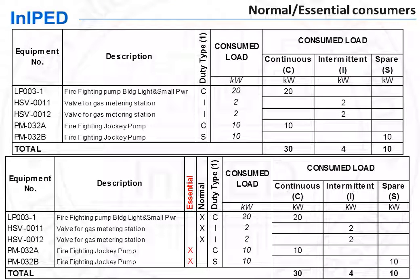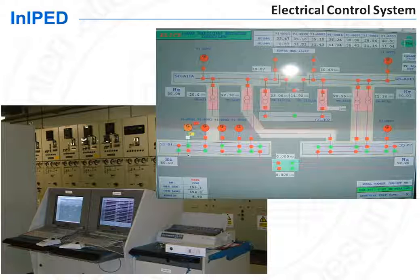The identification of essential consumers is done by the electrical engineer by asking process and mechanical engineers. A load shedding system is implemented so that in case of loss of the main power generators, the limited amount of essential power available from the emergency generators is fed to the essential consumers only. This load shedding, together with other functions of monitoring and control of the electrical system, is performed in the electrical control system, also called the power distribution control system, PDCS.